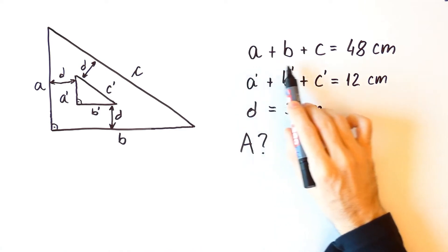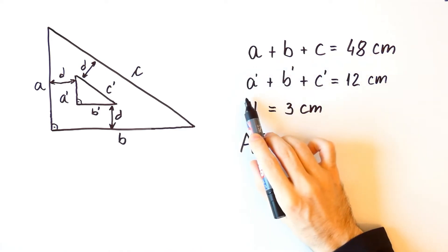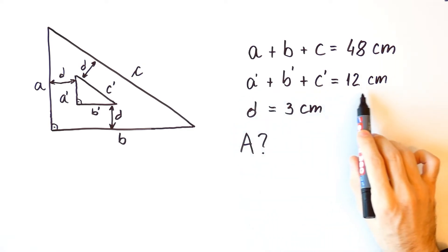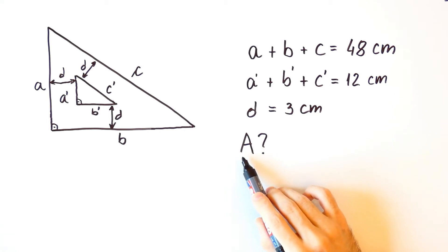If we know that the perimeter of the larger triangle is 48 cm and that the perimeter of the smaller triangle is 12 cm and if D is 3 cm, can we calculate the area of our figure?